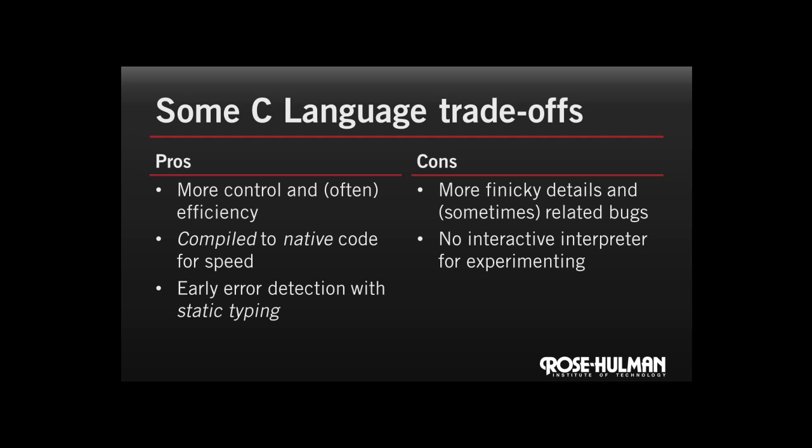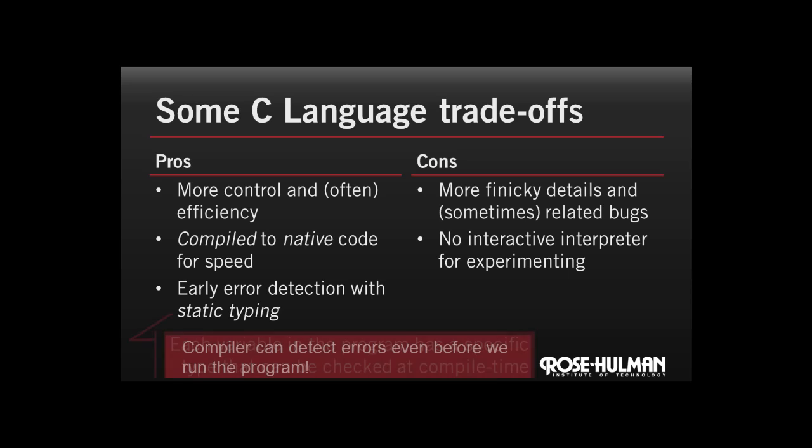Finally, we have static typing, which makes it easier to catch programmer errors. Static typing means that every variable in the program has a specific type that can be checked at compile time. Of course, there's the extra work that's required to actually declare those types. Until next time, I'm Matt. Catch you later.